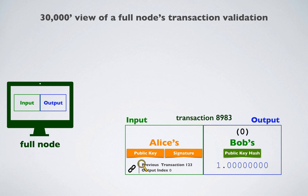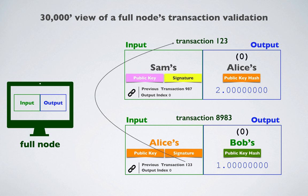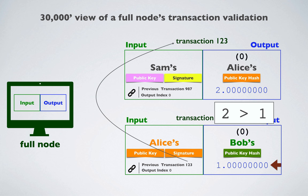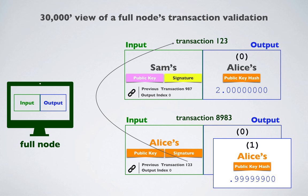Once the wallet has completed the transaction, it will broadcast that transaction to a random full node on the Bitcoin network, and the full node will begin validating the transaction immediately. The node will look up the referenced output from a previous transaction within a block via its transaction ID. In order to be valid, there must be enough unspent transaction outputs to equal the amount of Bitcoin to be transferred. Any remaining Bitcoins from an input not specified in the output of the transaction are given to the miner as a transaction fee. Luckily, Alice's wallet added an additional output giving Alice her change back.